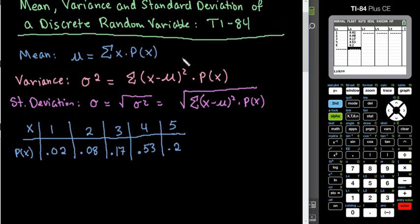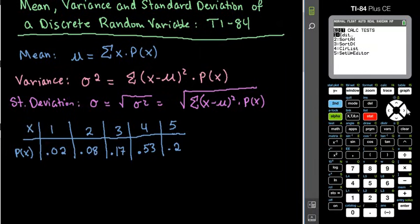So with this, after you have entered your data, you are going to hit the stat button and arrow over to where it says calculate. When you arrow over to calculate, we're going to choose the first one, the one var stats. If this menu does not show up for you, I will show you what your command should look like after I'm done.